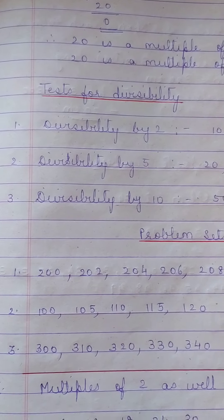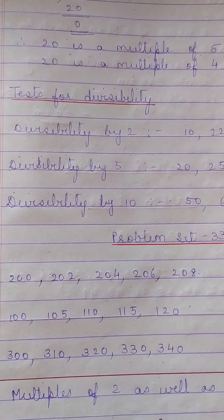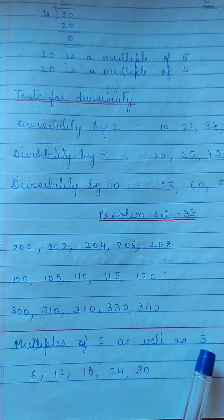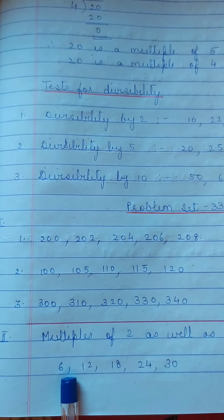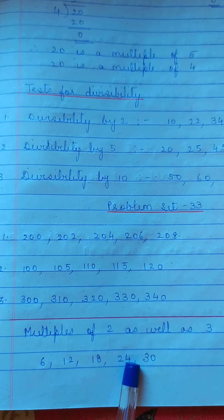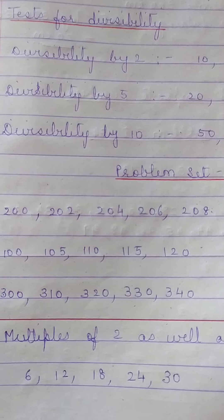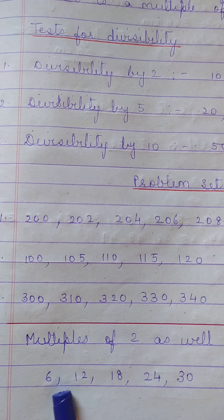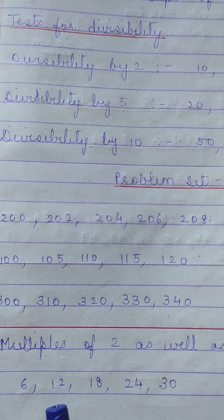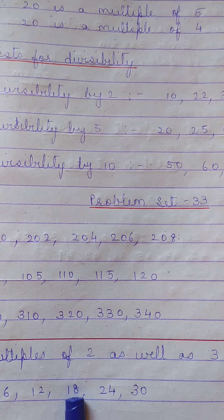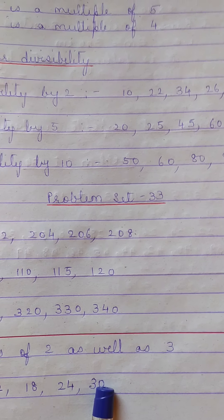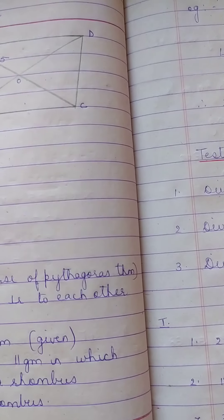Question 2: write 5 numbers that are multiples of both 2 and 3. To find such numbers, multiply 2 and 3 to get 6, so we need multiples of 6: 6, 12, 18, 24, 30. Verification: 2×3=6, 3×2=6; 2×6=12, 3×4=12; 2×9=18, 3×6=18; 2×12=24, 3×8=24; 2×15=30, 3×10=30.